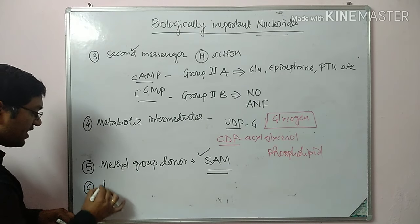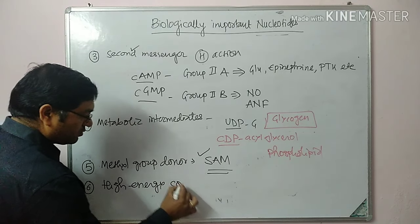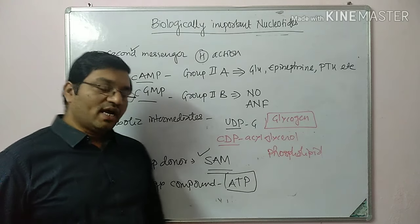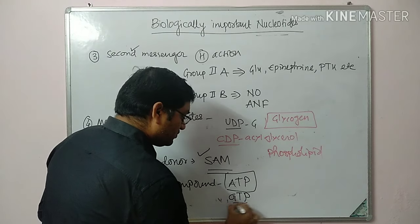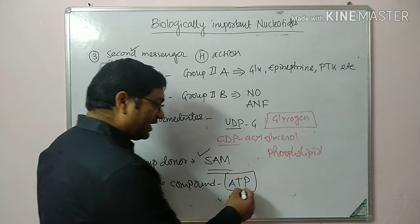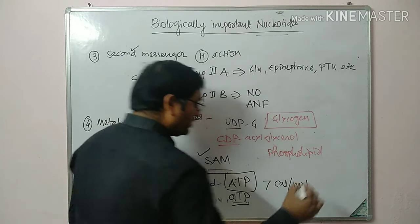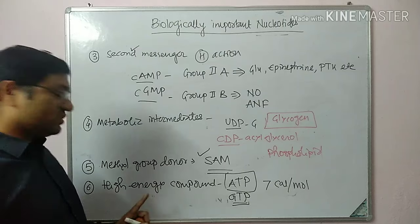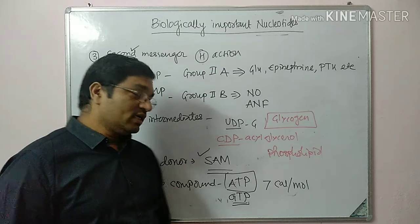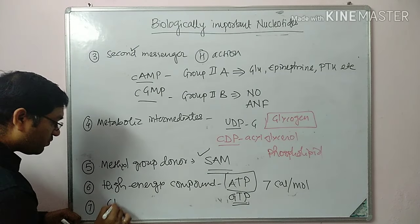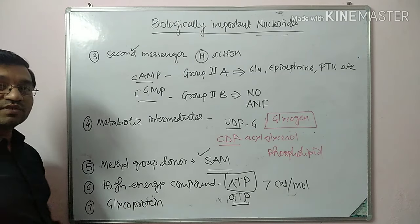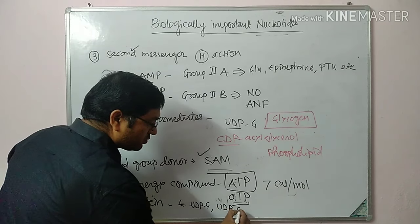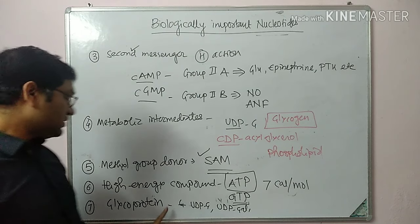Some nucleotides act as high energy compounds. For example, ATP is known as the energy currency of the cell, and in some reactions GTP is also utilized. Hydrolysis of 1 phosphate bond in ATP gives 7 kilocalories per mole. Nucleotides are also important in the synthesis of glycoproteins — UDP-glucose, UDP-galactose, mannose, and neuraminic acid help in the synthesis of glycoproteins.